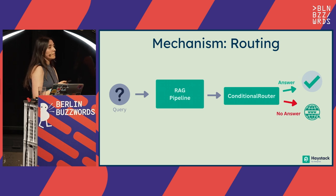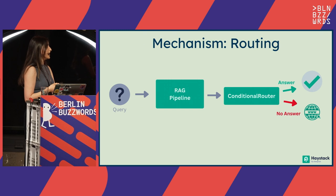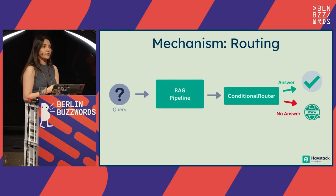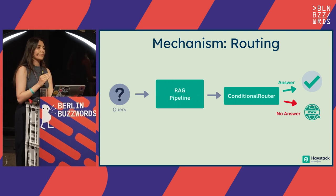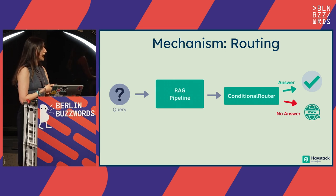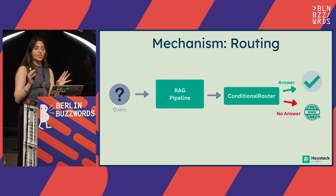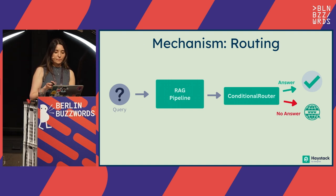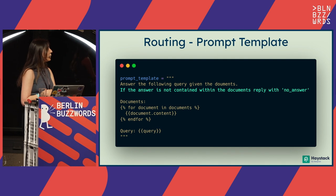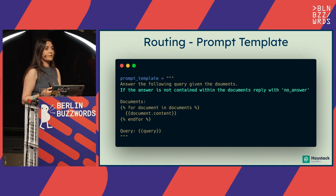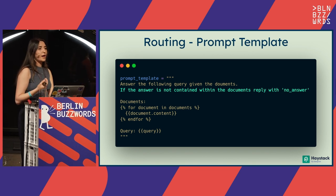In that case, what I can do is implement a fallback mechanism with routing. I add an extra component — a conditional router — right after my RAG pipeline. This conditional router can decide whether this was a valid answer to the query, or just a reply from the LLM saying the answer was not found. When that's the case, it can direct the query to the web. To make this work, we need some changes in our RAG pipeline. This is going to be our new prompt template — the rest is just RAG, but I have one extra line: if there is no information about this query in the given documents, answer with the 'no answer' phrase.